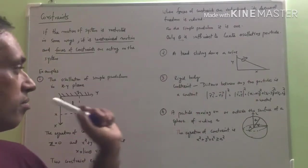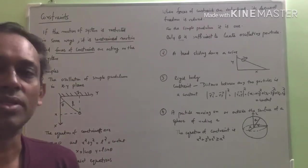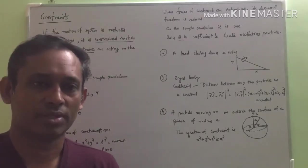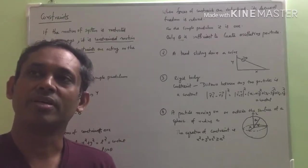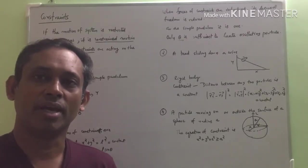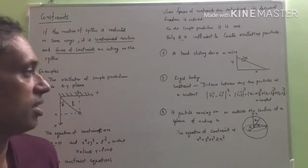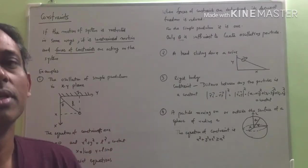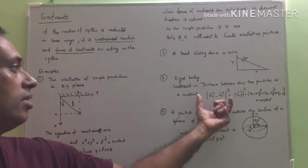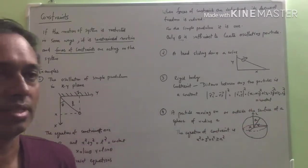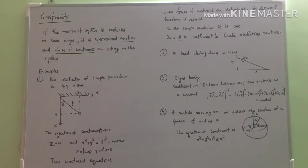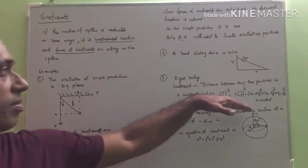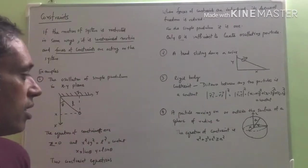Another example is a rigid body. The constraint is that the distance between any two particles is a constant. The rigid body will be moving, but the distance between any two particles will be constant. That is represented by the equation: r_i minus r_j squared, which equals (x_i minus x_j) squared plus (y_i minus y_j) squared plus (z_i minus z_j) squared, and that is a constant. So this is the equation for the constraint.